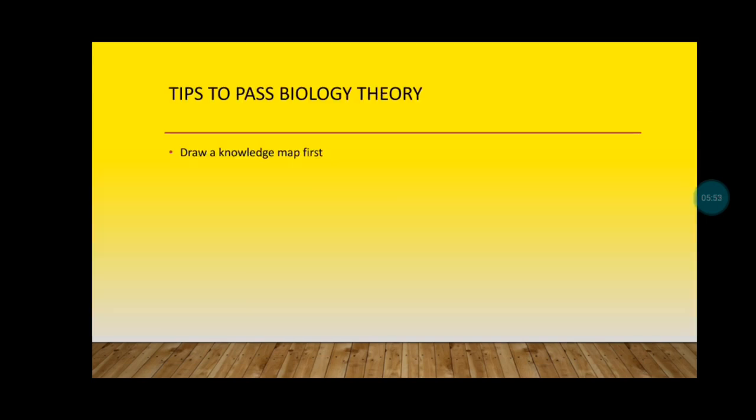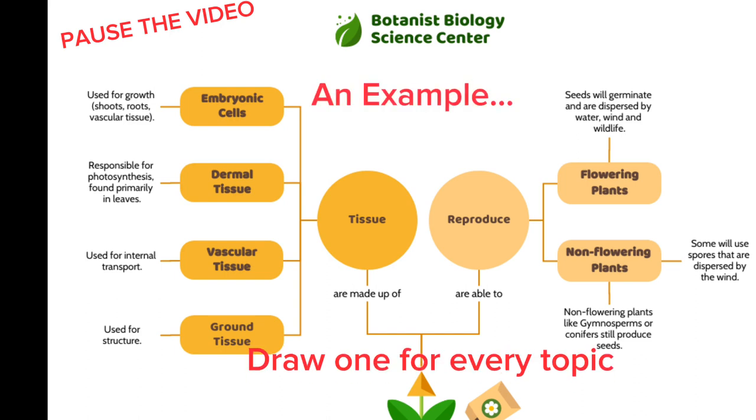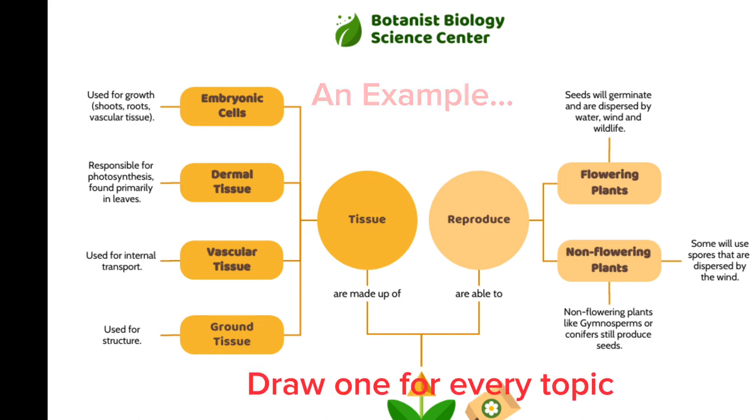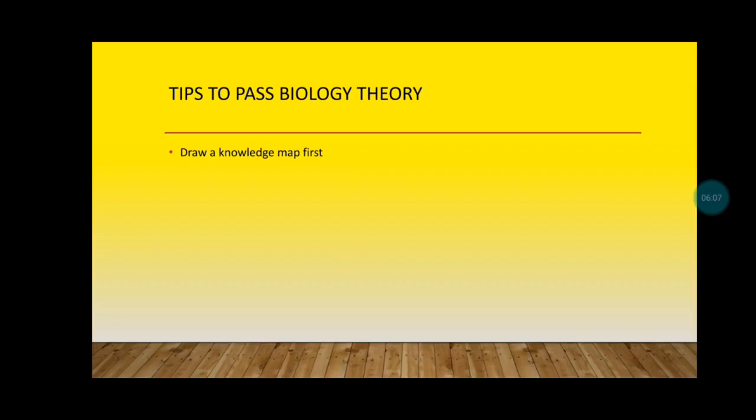Now you should draw a knowledge map first for whatever topic you are studying. And this is how a knowledge map looks. The knowledge map gives you the bigger picture of whatever you are studying. Biology, there's a lot of reading. If you don't know where you are going, you wouldn't know when you have a full grasp of whatever concept you are studying.